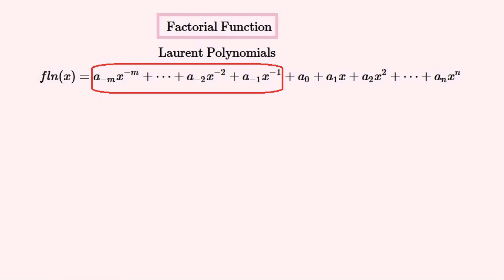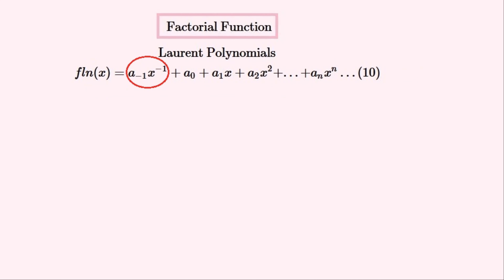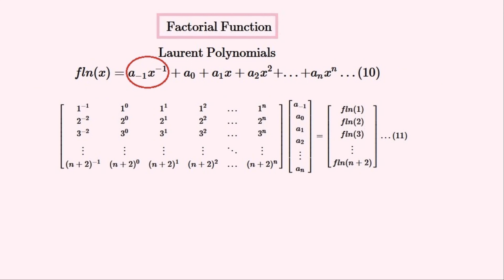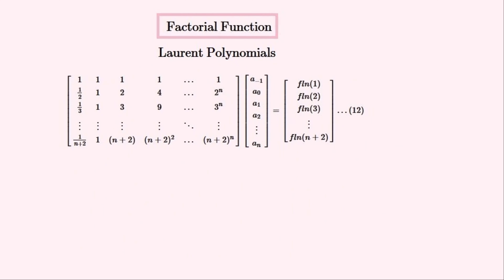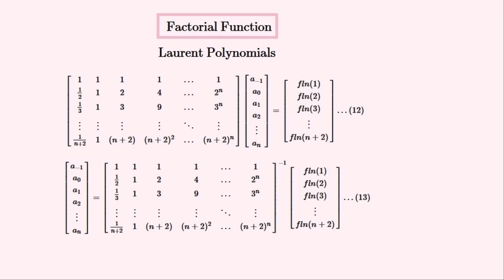We can use Laurent polynomials to approximate this function. These polynomials use x raised to the power of a negative integer, giving the polynomial extra degrees of freedom because these extra terms might be able to more easily approximate this function. The disadvantage is that the function doesn't exist when x is equal to 0. We'll just use the x to the power of minus 1 term for now. We'll create this matrix equation including this reciprocal of x term, not using x equal to 0. After evaluating some of the elements, we make the coefficients vector the subject of this equation, and then we only need a value of n to solve it.